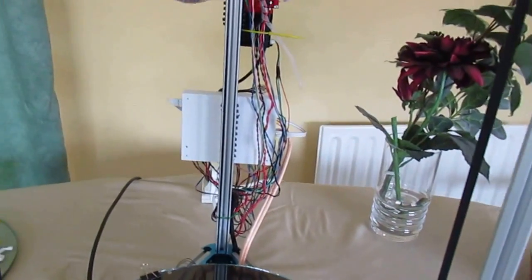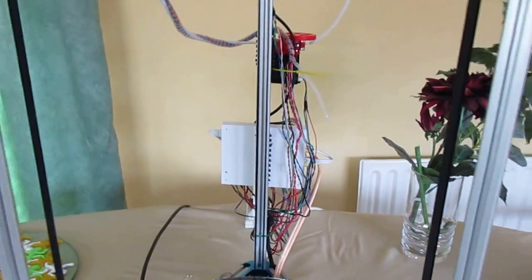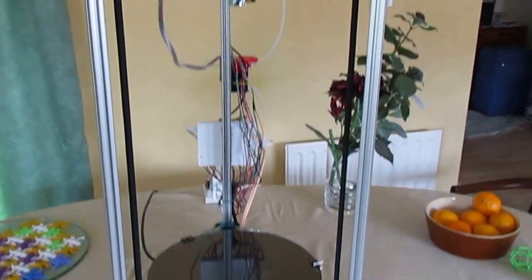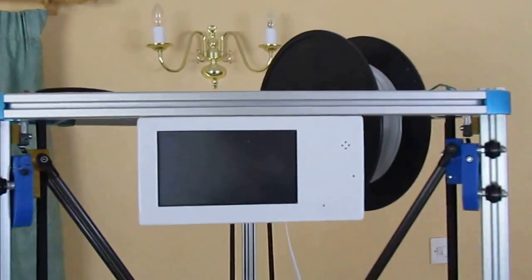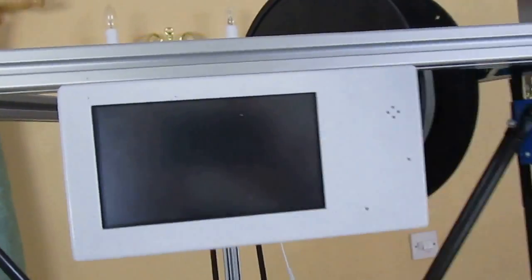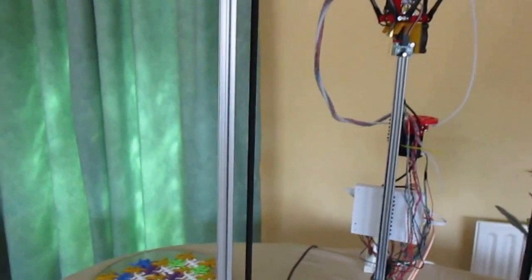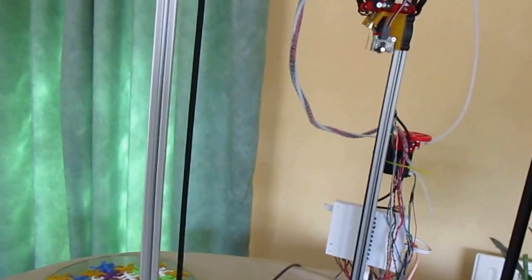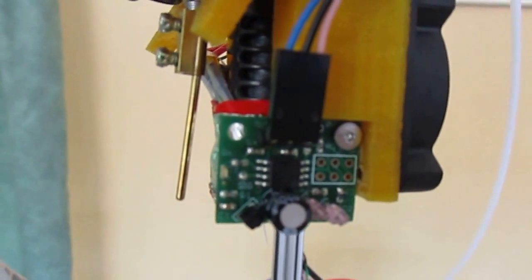It has Duet electronics which are in the white box at the back and it also has the Panel Due LCD controller touch panel. In this video I'm going to demonstrate my mini IR sensor board which is this little device here mounted on the hot end.